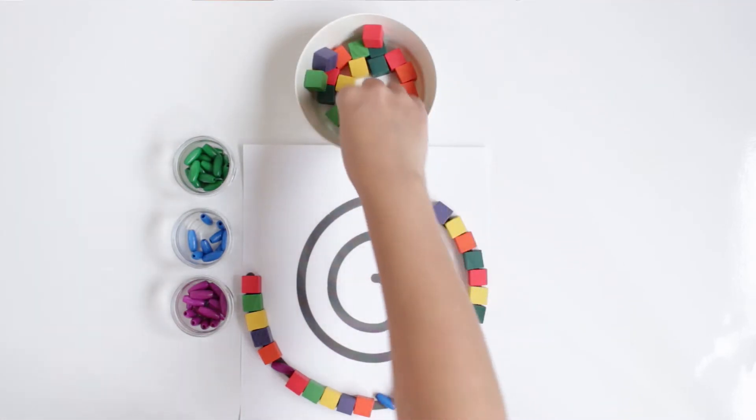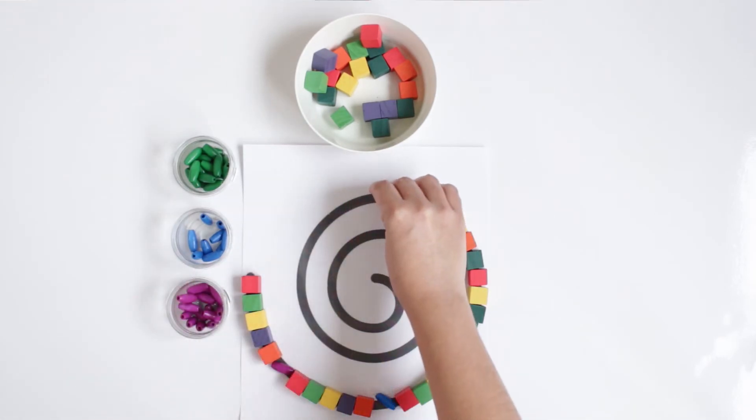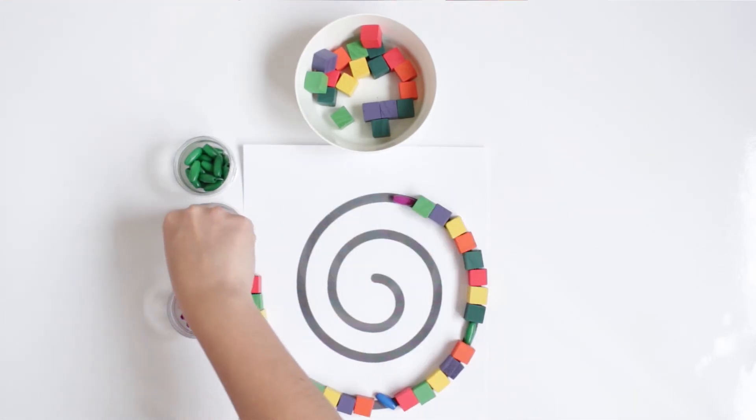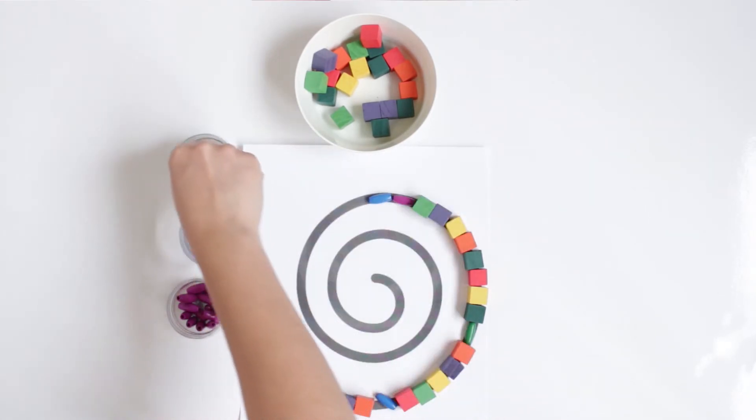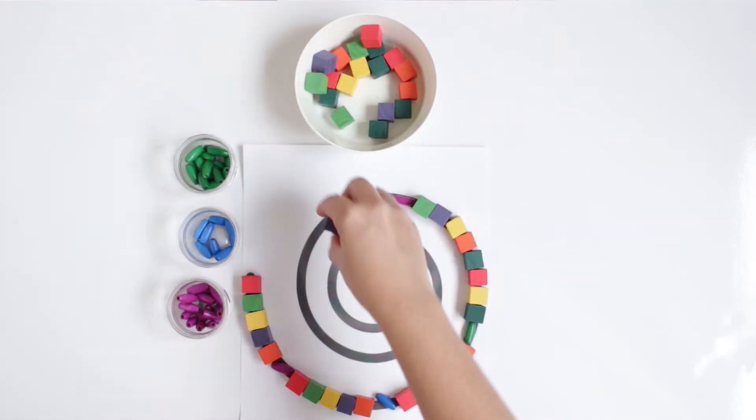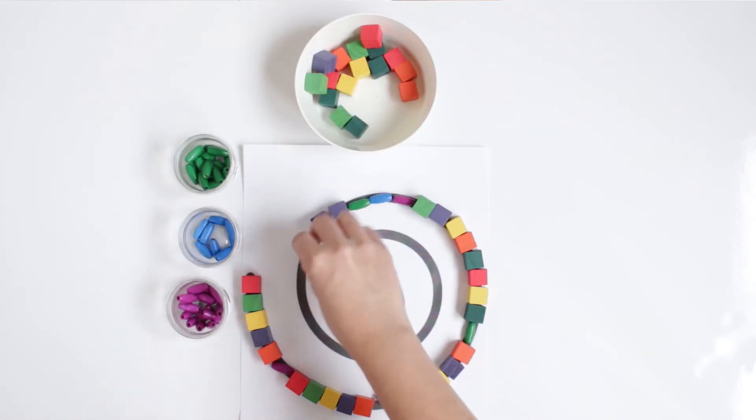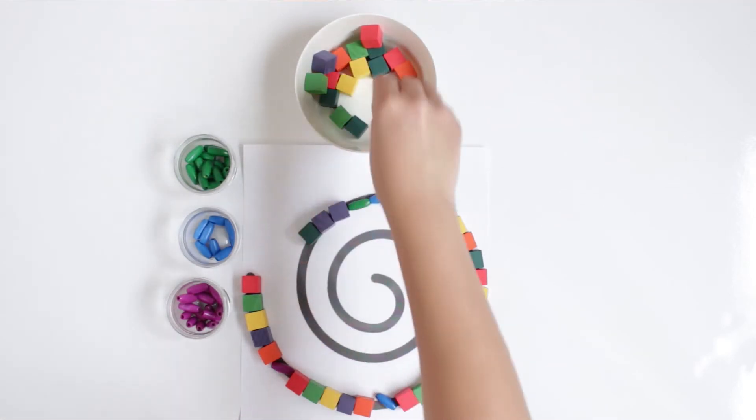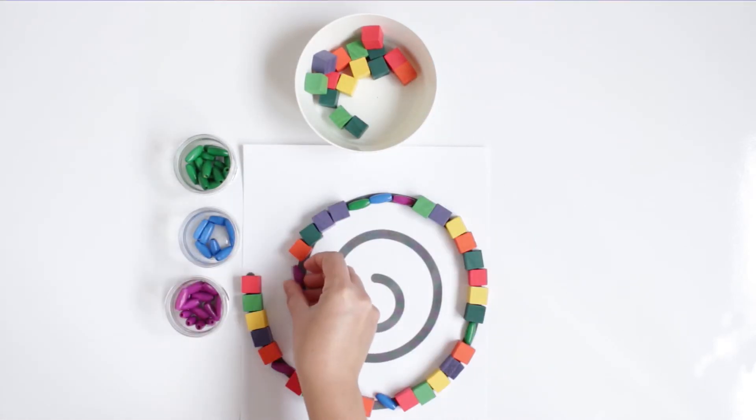Or you can just do it randomly like that, and for example, in between with these small ones: purple, blue, green. Continue with the cubes. So kids, they are really creative, so I can let them play freely.